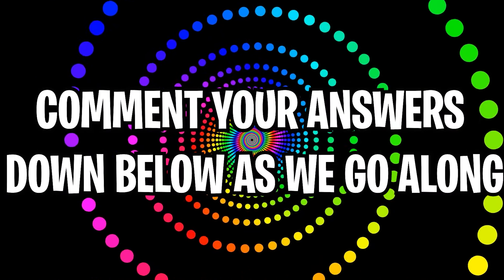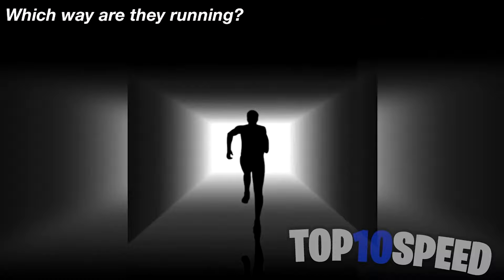Which way is this person running? Because some people see them running towards the camera and others see them running away from the camera. Personally, if I look at it once, it looks like they're running away, and I look at it again, it looks like they're running towards me. Which way do you guys see the person running? Comment down below.